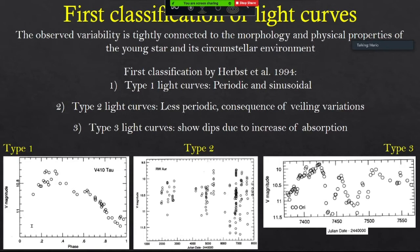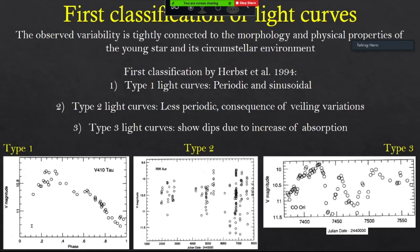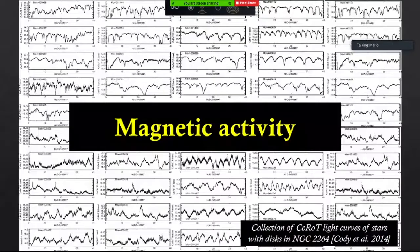There were several attempts to classify the kind of variability by studying the light curves of these stars. The first attempt was made by Herbst in 1994, who classified the light curves into different types: Type 1 — periodic and sinusoidal light curves; Type 2 — light curves due to variation of veiling related to the accretion process; and Type 3 — light curves with very long and deep dips due to variation of absorption or extinction from circumstellar material. This classification, despite being quite old, is what we still use today.